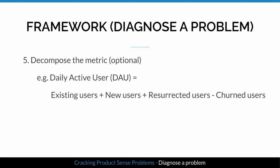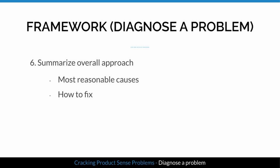For more in-depth analysis, decompose the metric. For example: DAU (daily active users) equals existing users plus new users plus resurrected users minus churned users — so you can examine which user group was the root cause. Finally, summarize your approach to show a clear and structured method. To make the answer even better, add what you think are the most reasonable causes and how you would fix them.